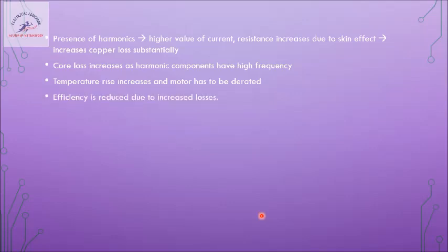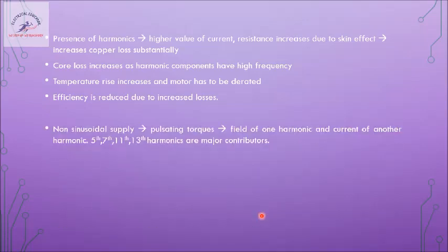Non-sinusoidal supply also produces pulsating torques. Different harmonic fields are induced in the air gap — the dominant harmonics being the 5th, 7th, 11th, and 13th. These four harmonic components produce four fields, giving 4 × 4 = 16 possible current-field interaction combinations. Each current interacting with a different field produces a torque — these 16 torques are called pulsating torques and are present when the supply voltage is non-sinusoidal.